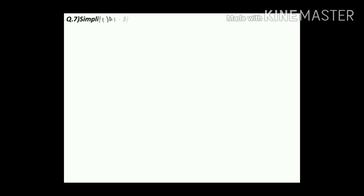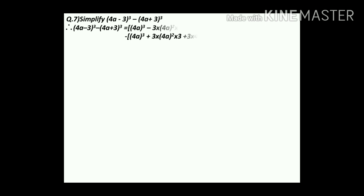Question number 7: Simplify (4a − 3)³ − (4a + 3)³. We need to do simplification using the formulas. Expanding (4a − 3)³ using (a − b)³ formula: 64a³ − 3(4a)² × 3 + 3 × 4a × 3² − 3³.